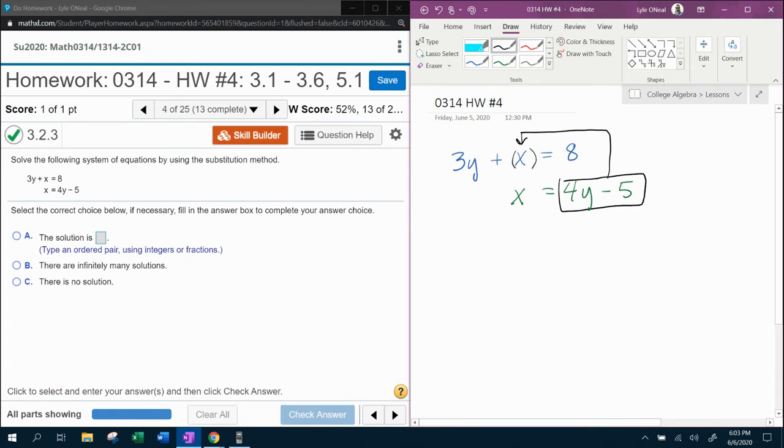So we're going to substitute for x what it's equal to. So that's going to give me 3y plus 4y minus 5, replacing the x with 4y minus 5, equals 8.